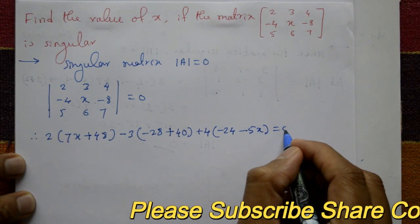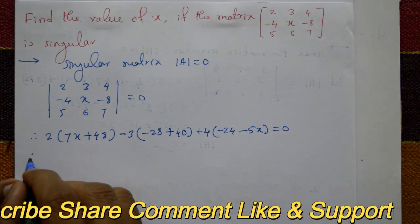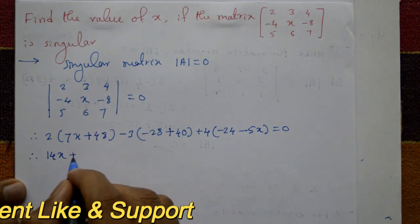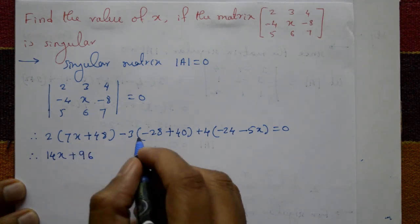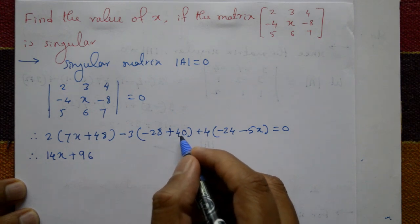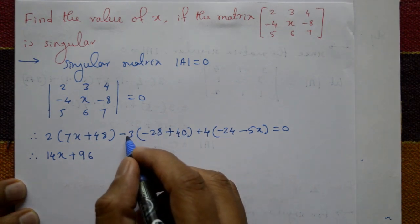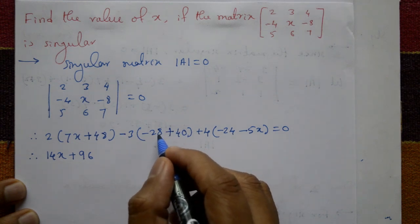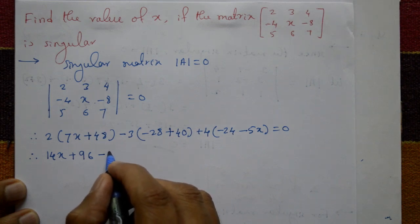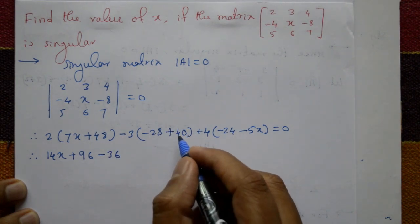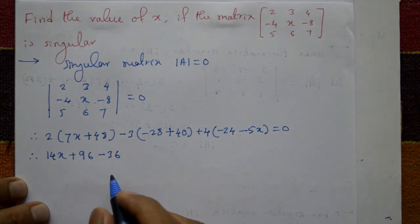This gives 14x, plus 96, and minus 28 plus 40 is -12, so plus 12. And 12 into -3 is -36.